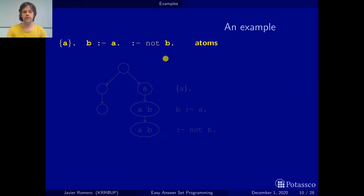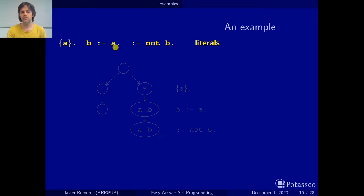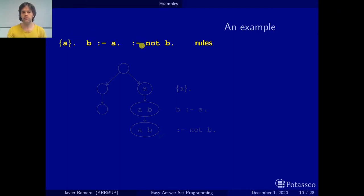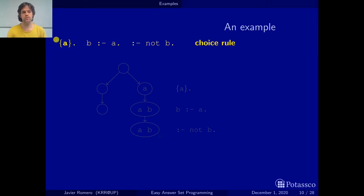Next we have literals. a, b, and 'not b' are literals. Basically, literals are atoms like a and b, or their negation — 'not' is the symbol we use for negation. So 'a' can be read as a condition on whether a is in an answer set, and 'not b' can be read as saying b is not in the answer set. Then we have one rule, a second rule, and a third rule. The first one is called a choice rule.